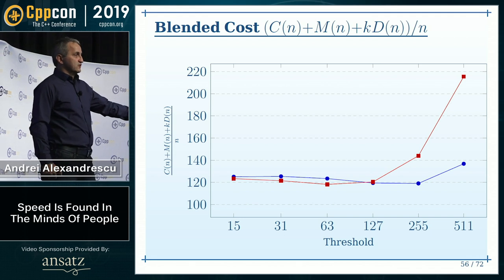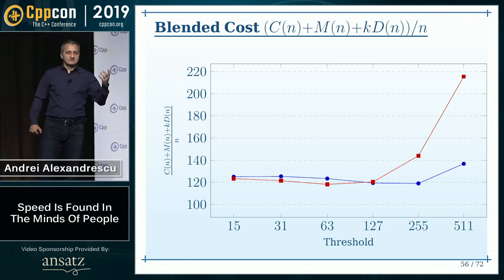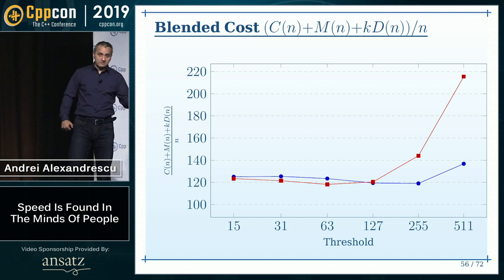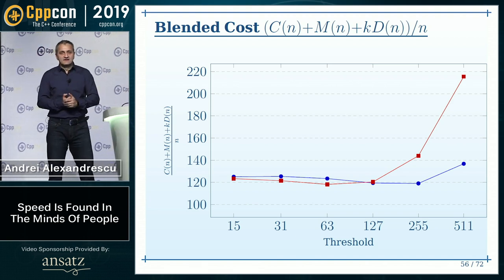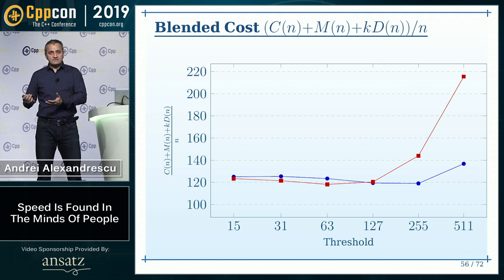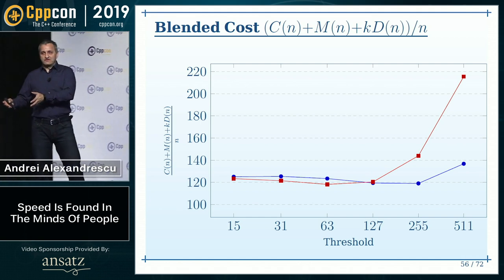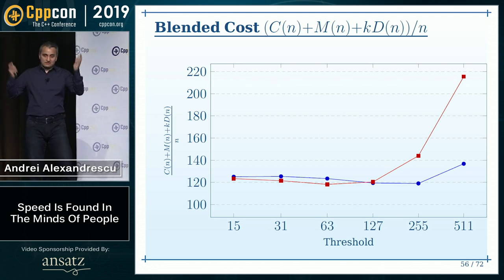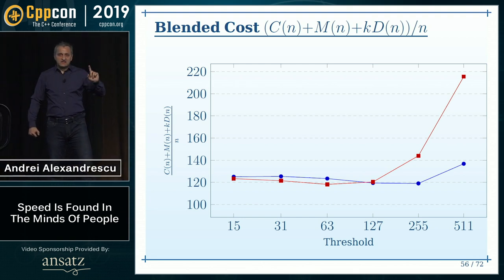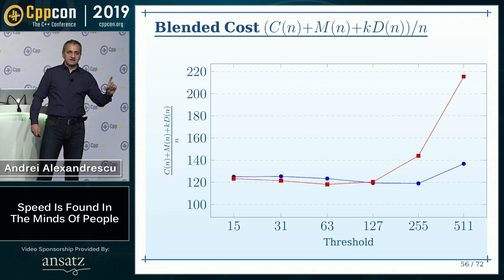This is the right metric to use for improving sort algorithms. There's no notion of this in any algorithm book we have — though it does appear in research literature. The books are obsolete. Research papers and the industry — because they measure — are giving good information. This is the right metric: blend comparisons, swaps, and the average distance between two array accesses. That gives you a good proxy for computation cost.